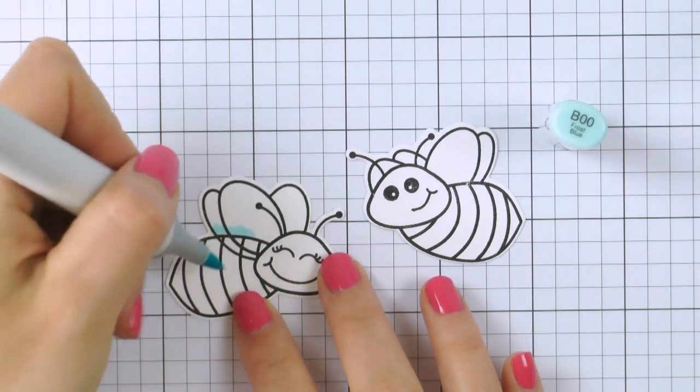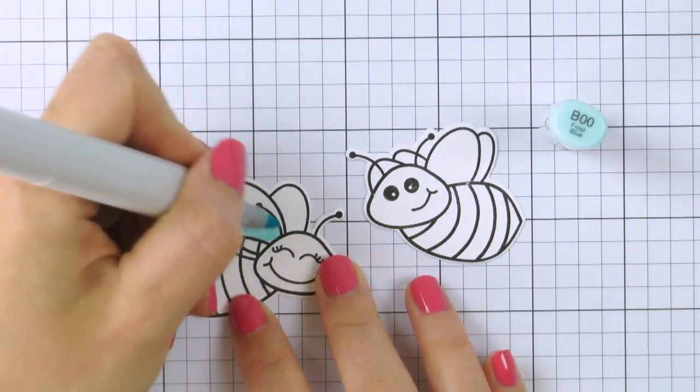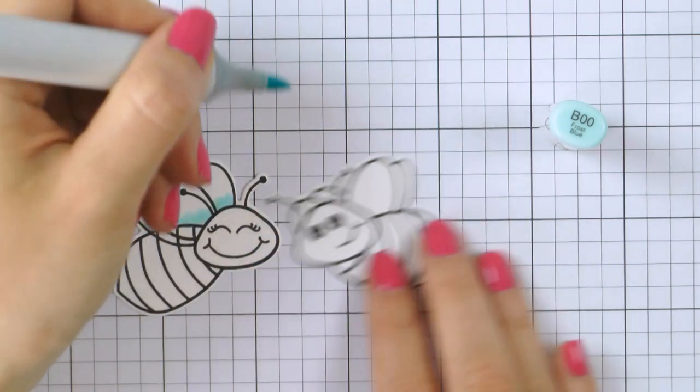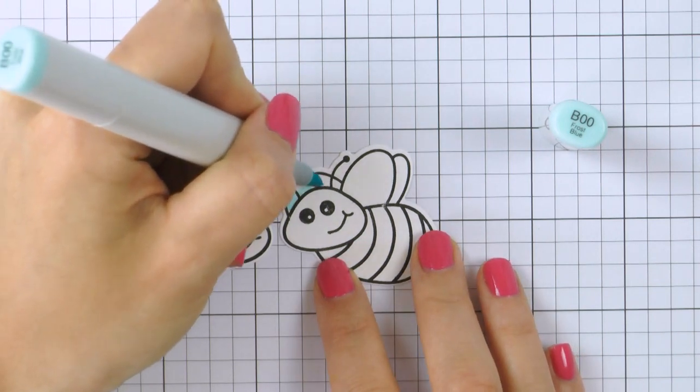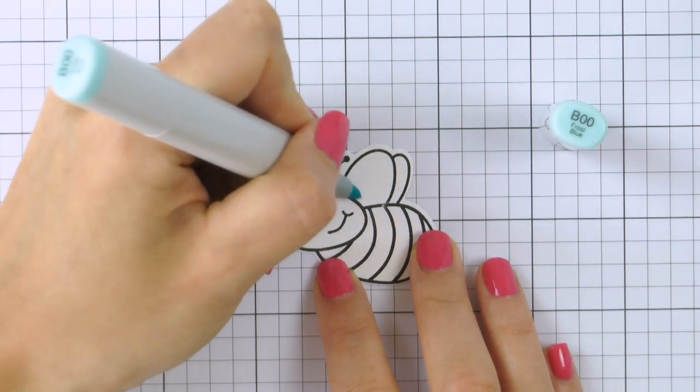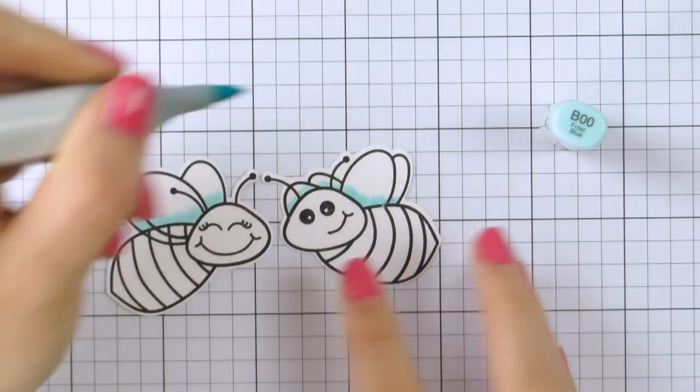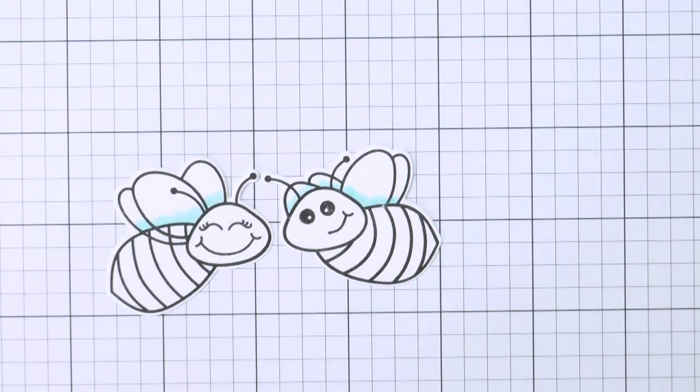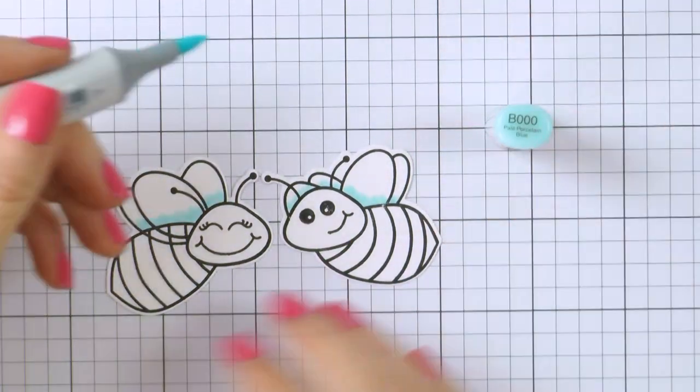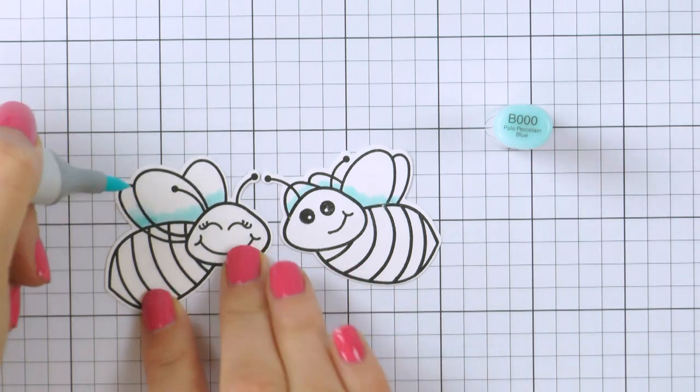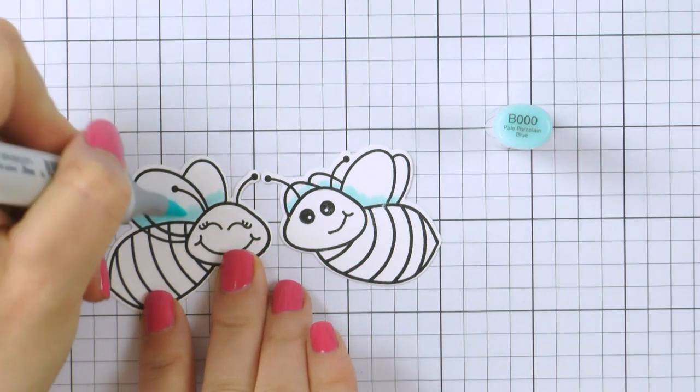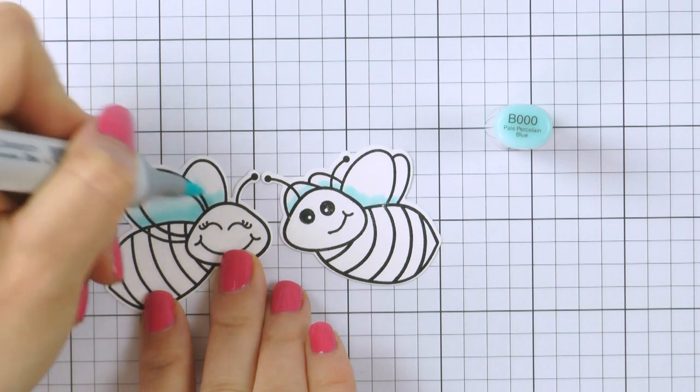For my coloring I'm using just a handful of Copic markers and as always I'm using my go-to Copic marker color combos. There's a link in the video description to a blog post on my blog about my most favorite Copic marker color combinations. Check it out if you're a beginner when it comes to Copics, I'm sharing just some of the marker combinations that work for me.